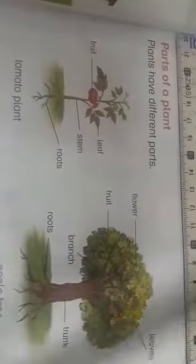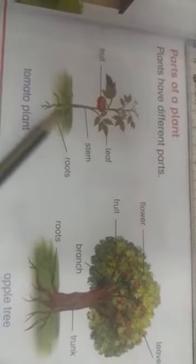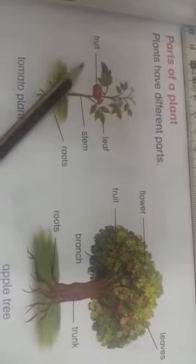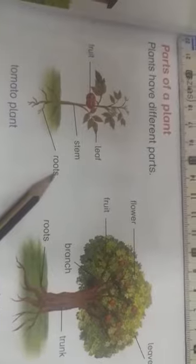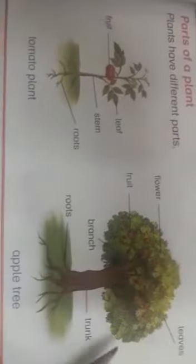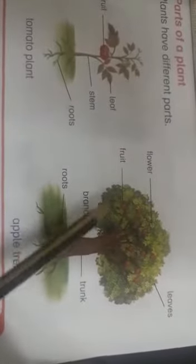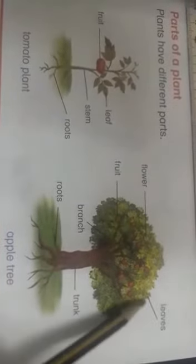Now we read about parts of a plant. Plants have different parts. In the first picture you have seen the tomato plant — tomato plant has fruit, leaf, stem, and roots. The other plant is an apple tree. Apple tree has roots, trunk, branches, fruit, flowers, and leaves.